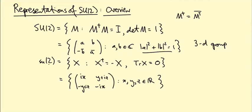You can also see this for the Lie algebra. The Lie algebra is little su(2). The unitary condition becomes, upon differentiation, the condition that X† = −X, which is the anti-Hermitian or skew-Hermitian condition. The fact that det(M) = 1 becomes the fact that tr(X) = 0 — if you exponentiate something with trace zero, you get something with determinant one.